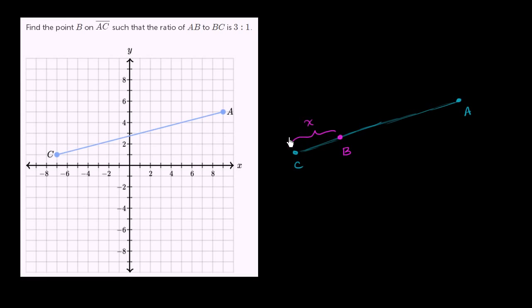The distance between C and B, that's this distance right over here. If this distance is x, then the distance between B and A is going to be 3 times that, so this will be 3x, such that the ratio of AB to BC is 3 to 1.